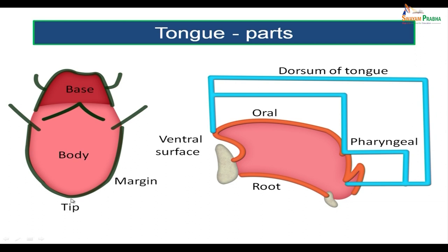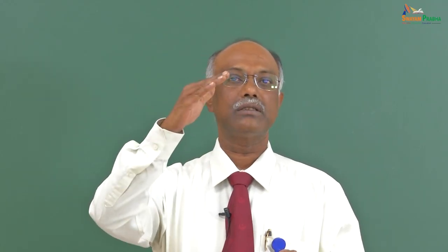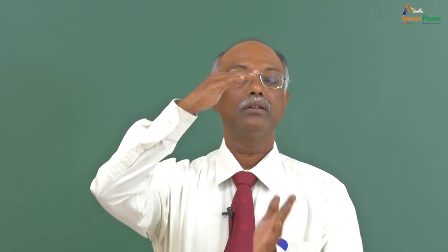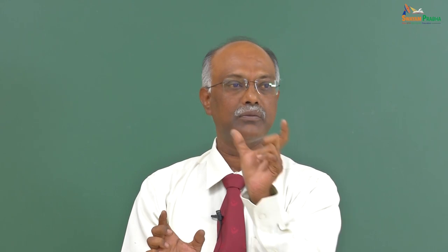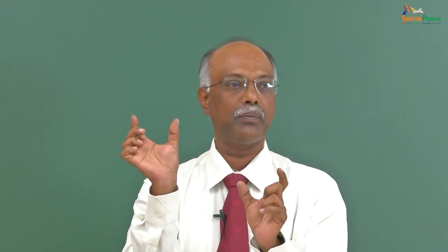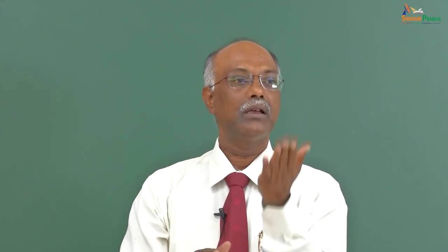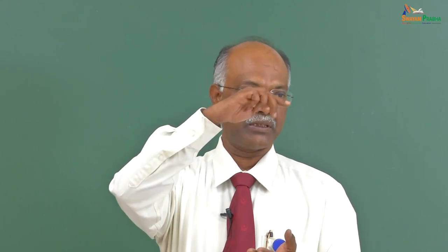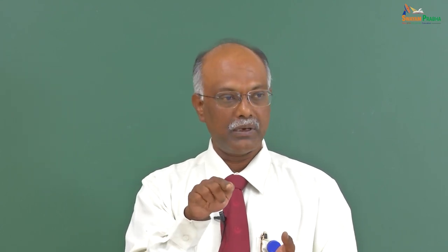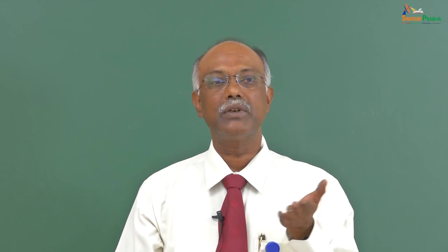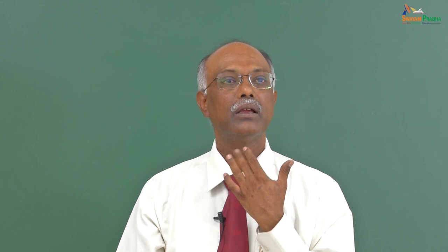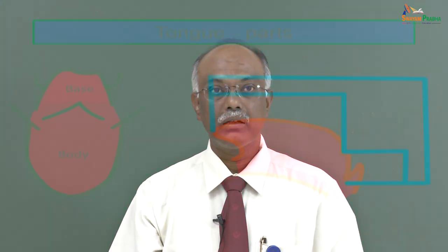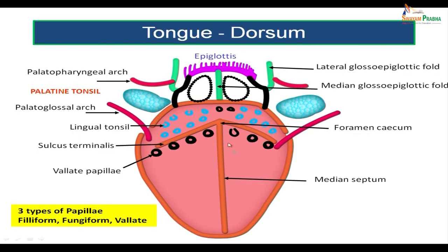Let's recapitulate. The tongue has a dorsal surface and a ventral surface. The dorsal surface is divided into two parts: an anterior oral part and a posterior pharyngeal part. The ventral surface extends from the tip to the mandible. The root is the attachment of the tongue to the floor of the mouth, extending from the mandible to the hyoid bone. Now let's have a detailed look at the dorsal surface.